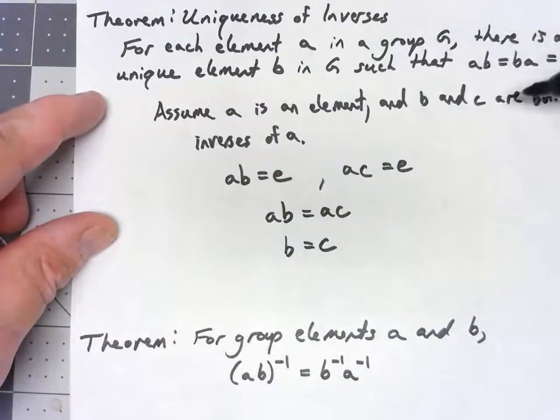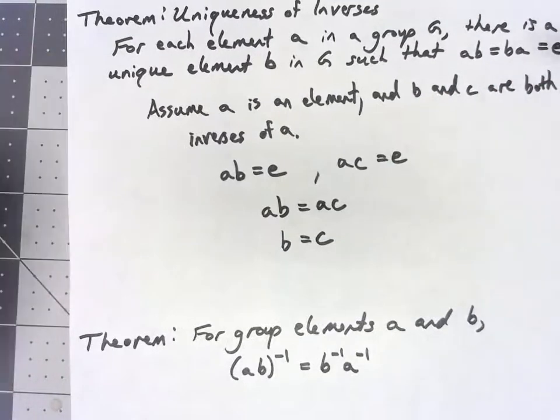There we go. If we had two different inverses, but they actually were the same thing, that must mean there's only one actual inverse.